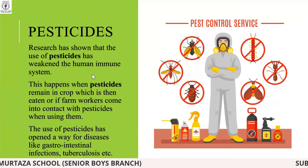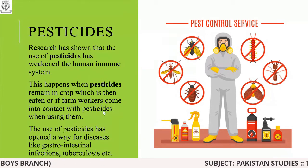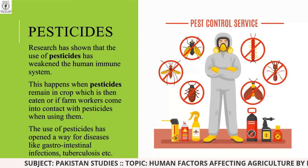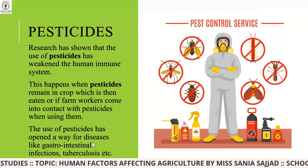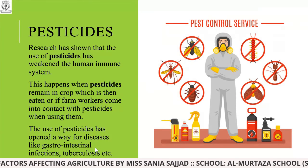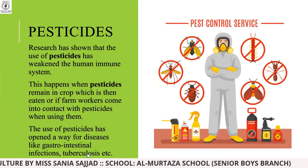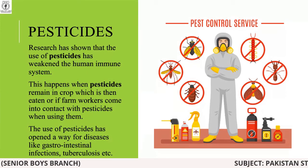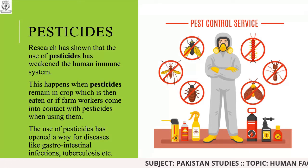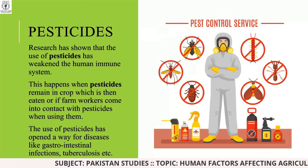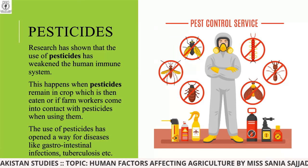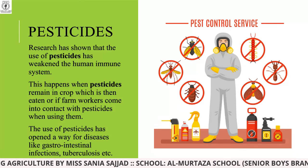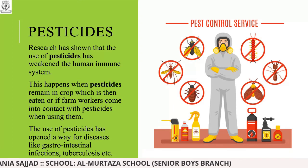Research has shown that the use of pesticides has weakened the human immune system. This happens when pesticides remain in crops that are then eaten, or when farm workers come into contact with pesticides while using them. The use of pesticides has opened a way for diseases like gastrointestinal infections and other illnesses. So while pesticides save crops, they also disturb the human immune system through chemical residue.